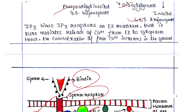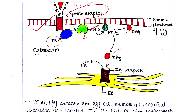IP3 binds the IP3 receptor on the endoplasmic reticulum membrane, which in turn mediates the release of calcium from the ER into the cytoplasm. Hence the concentration of free calcium increases in the cytosol. PLC cleaves PIP2 into DAG and IP3; IP3 binds the IP3 receptor in the endoplasmic reticulum, and when it binds, calcium ions are released into the cytosol of the egg.